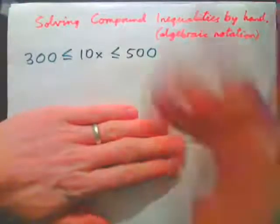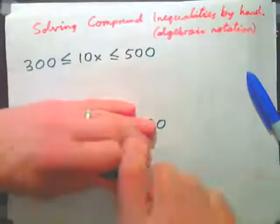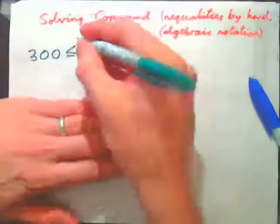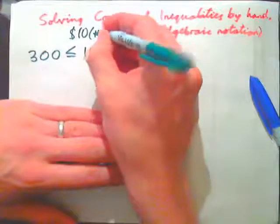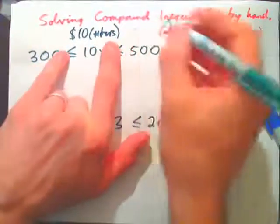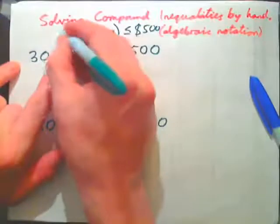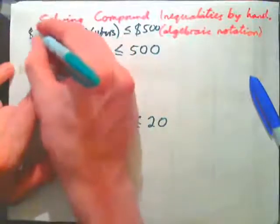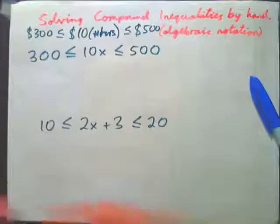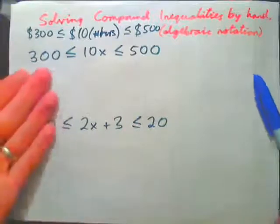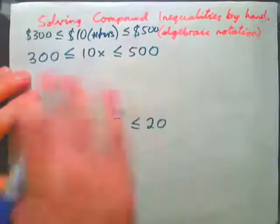If we imagine a job that pays $10 per hour, so here we have 10x — that's a wage of $10 times the number of hours you work. And if you want that to be less than or equal to $500 but greater than or equal to $300, how many hours do you need to work to get that? Well, obviously between 30 and 50 hours, right? And that demonstrates how we can solve these inequalities.